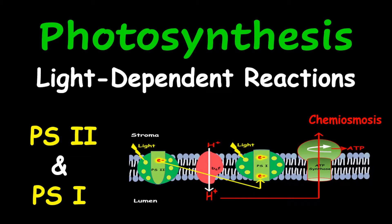Hello everyone and welcome. Today we're looking at photosynthesis, particularly the light-dependent reactions, simply called light reactions, because light is needed for these reactions to take place. Our highlights for today include photosystem 2, photosystem 1, and chemiosmosis.